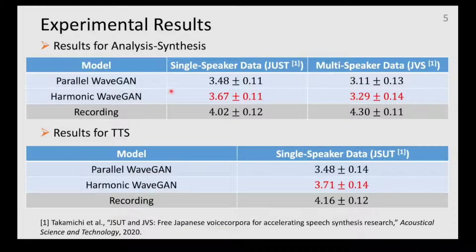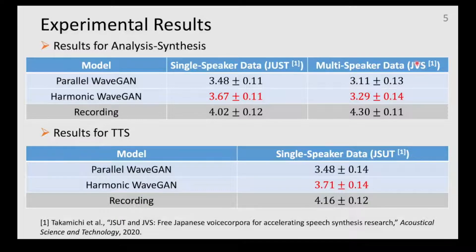The MOS test was used to evaluate the synthesized speech. The JSUT is a single Japanese speaker corpus, including both male and female speakers. The upper figure shows the results of analysis synthesis. In both the JSUT and JBS corpus, the Harmonic Wave GAN showed higher naturalness than PWaveGAN.